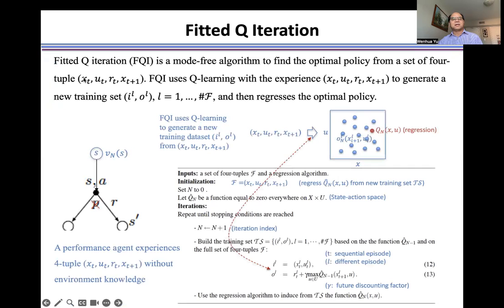This is the current state, and this action is taken at the current state and receives a reward. Then an agent moves from its current state to the next state.